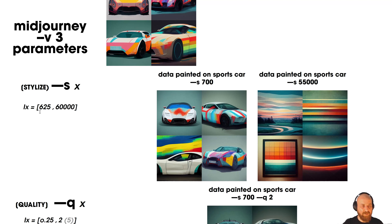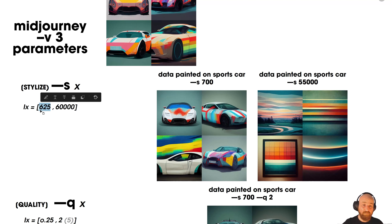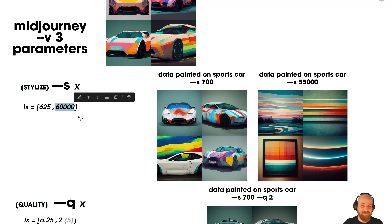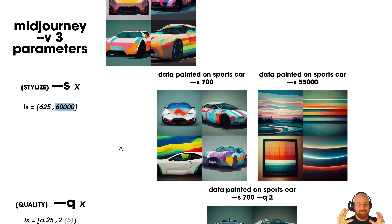The first parameter is stylize, used with double-dash S followed by a number. The range is from 625 to 60,000. If you put a number closer to 625, you get images that are more literal — if you type 'car,' you get something that looks like a car. If you go closer to 60,000, you almost never know what you're getting — it becomes super abstract, generating ideas loosely related to the prompt but not necessarily close to it.